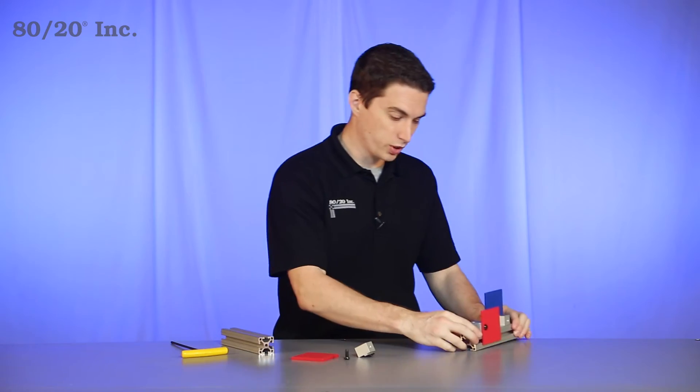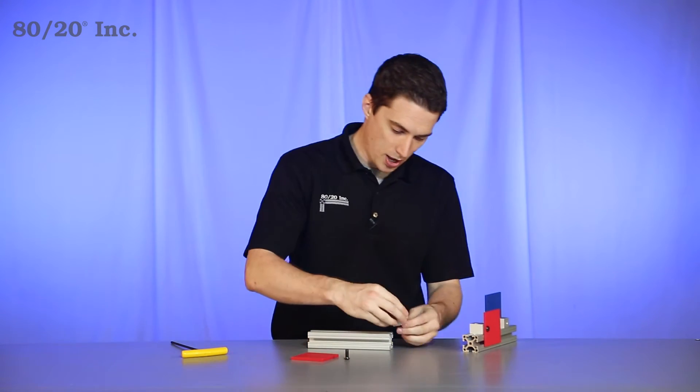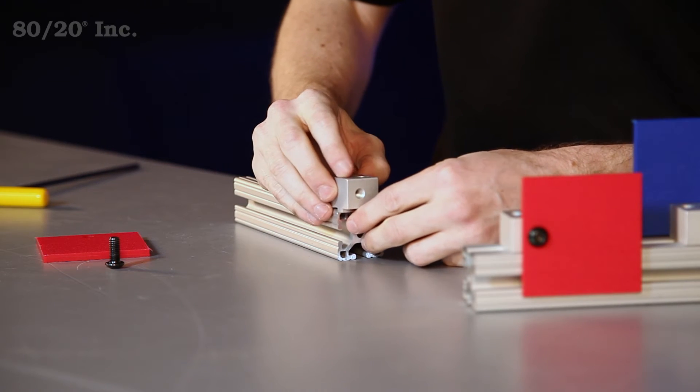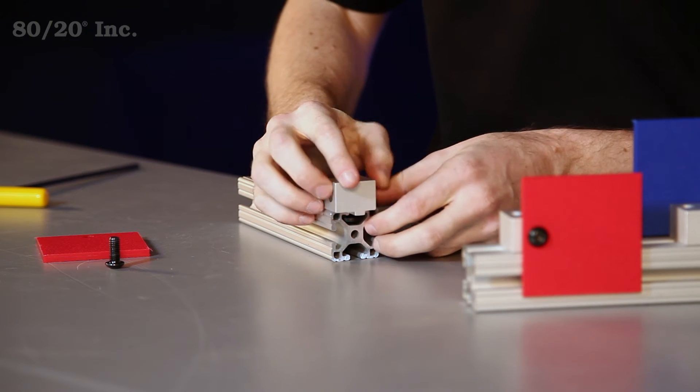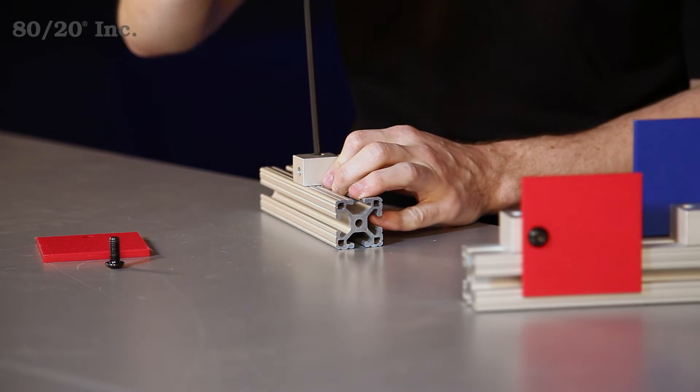Now in our example, we're going to rest it on the surface of the profile. So we'll take our panel mounting block, we'll go ahead and slide it into the open T-slot, find the location we want and tighten it down with our wrench.